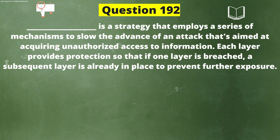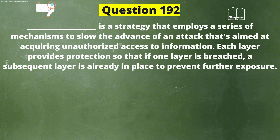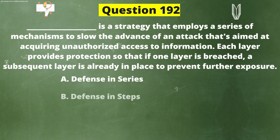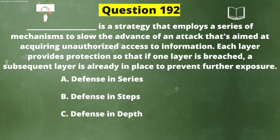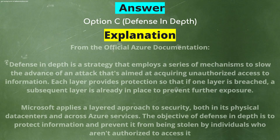Next question: Dash is a strategy that employs a series of mechanisms to slow the advance of an attack that's aimed at acquiring unauthorized access to information. Each layer provides protection so that if one layer is breached, a subsequent layer is already in place to prevent further exposure. The options are: A) Defense in Series, B) Defense in Steps, C) Defense in Depth, D) Defense in Layers. The correct answer is option C: Defense in Depth.